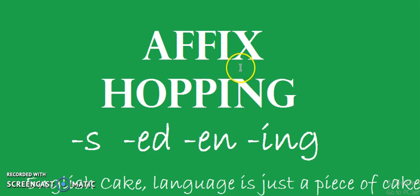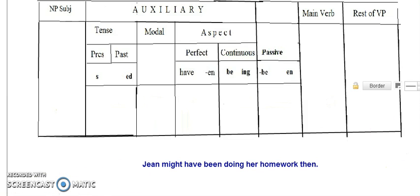Let's look at an example. We have this sentence: Jean might have been doing her homework then. Now we want to make affix hopping for this sentence. What we're gonna start with is word by word.